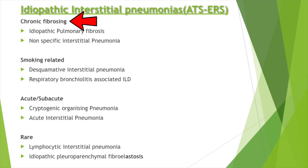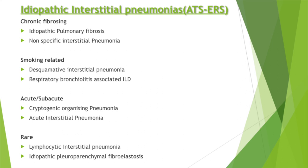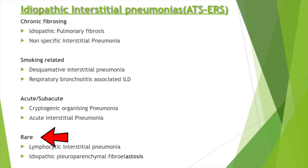The first group of IIPs is the chronic fibrosing type — idiopathic pulmonary fibrosis and non-specific interstitial pneumonia belong here. Then is the smoking-related group, which includes desquamative interstitial pneumonia and respiratory bronchiolitis-associated ILD. The acute/subacute group includes cryptogenic organizing pneumonia and acute interstitial pneumonia.